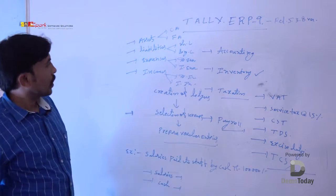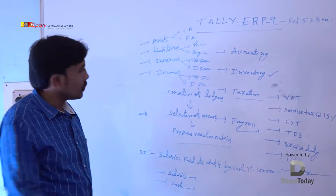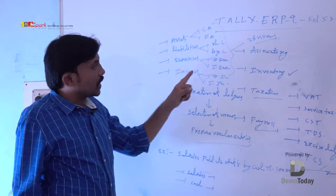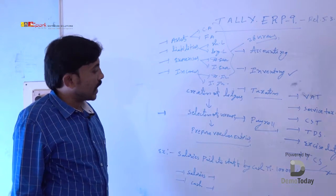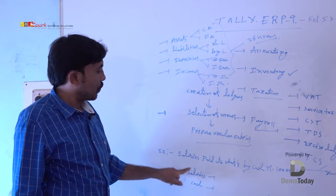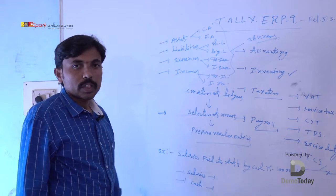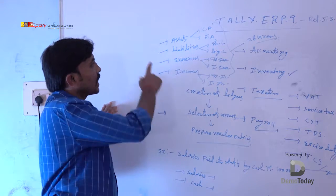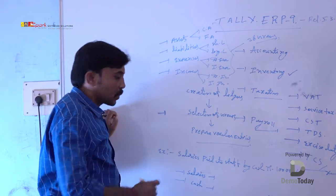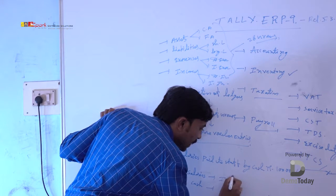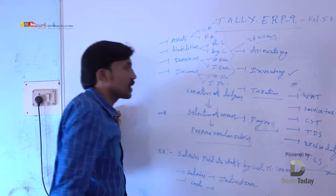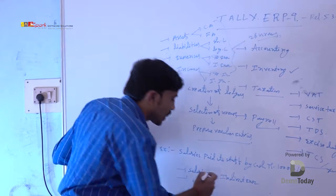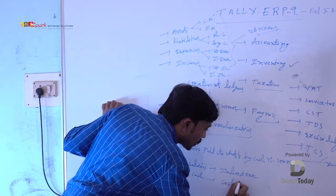As commerce students, you know these manual groups. In Tally software, these groups are divided into 28 pre-defined groups. In ledger creation, you select from the default 28 groups the one related to your ledger. For example, Salaries is an expense — specifically indirect expenses. You select indirect expenses. For Cash, in manual accounting it is a current asset, but in Tally software there is a separate group called 'Cash in Hand'.